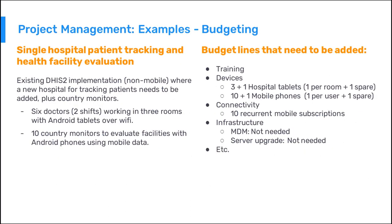Each DHIS2 implementation is different and its budget and resources will depend completely on the specifics of the use case — target, configuration, scope, size, among others. Two scenarios are provided in this course to help you understand the best strategy to follow. In the first scenario, a new hospital is added to an existing DHIS2 implementation for tracking patients. This hospital is managed by six doctors working in two shifts, three per shift, using Android tablets over a Wi-Fi connection. Country monitors are also needed to evaluate other facilities using mobile data.